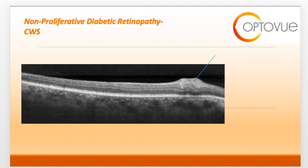Non-proliferative diabetic retinopathy represents the earliest stages of retinopathy caused by diabetes. Diabetes causes damage to the small blood vessels of the retina. Damage to these small blood vessels results in the findings that we are accustomed to seeing, including hemorrhages, cotton wool spots, exudates, and edema.